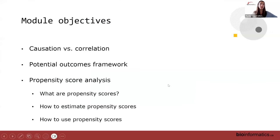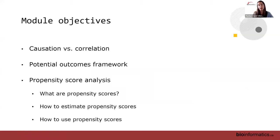With that, we're first going to go over causation versus correlation, then the potential outcomes framework, followed by propensity score analysis — which is just one method of causal inference. We're going to define what propensity scores are, why we would use them, and how to estimate them using some of the methods we've already covered.